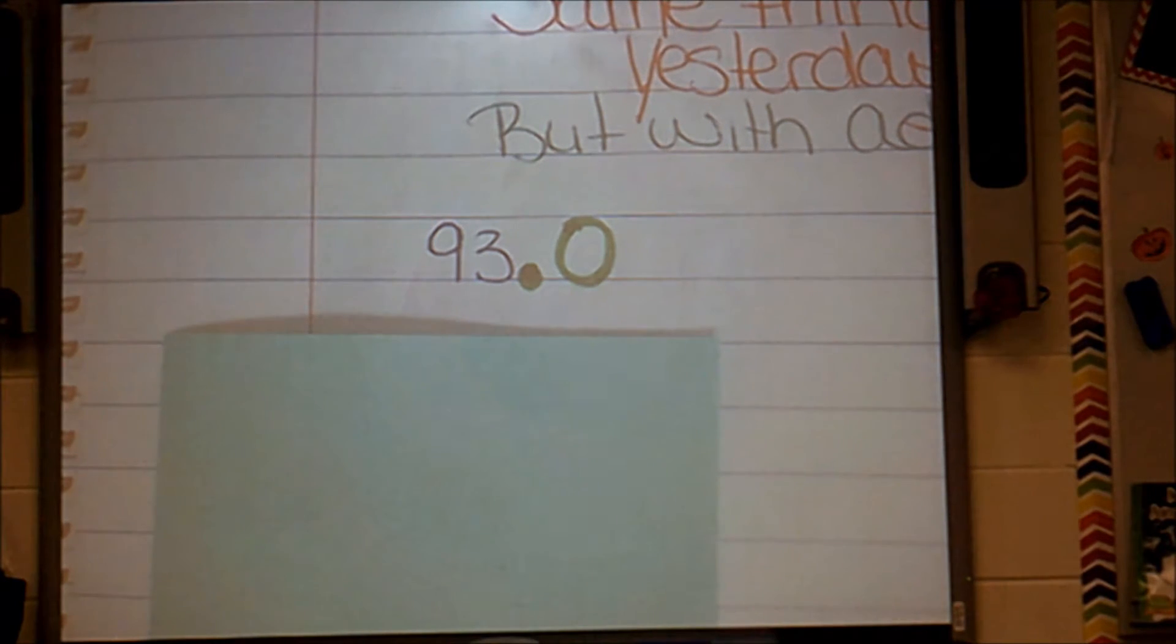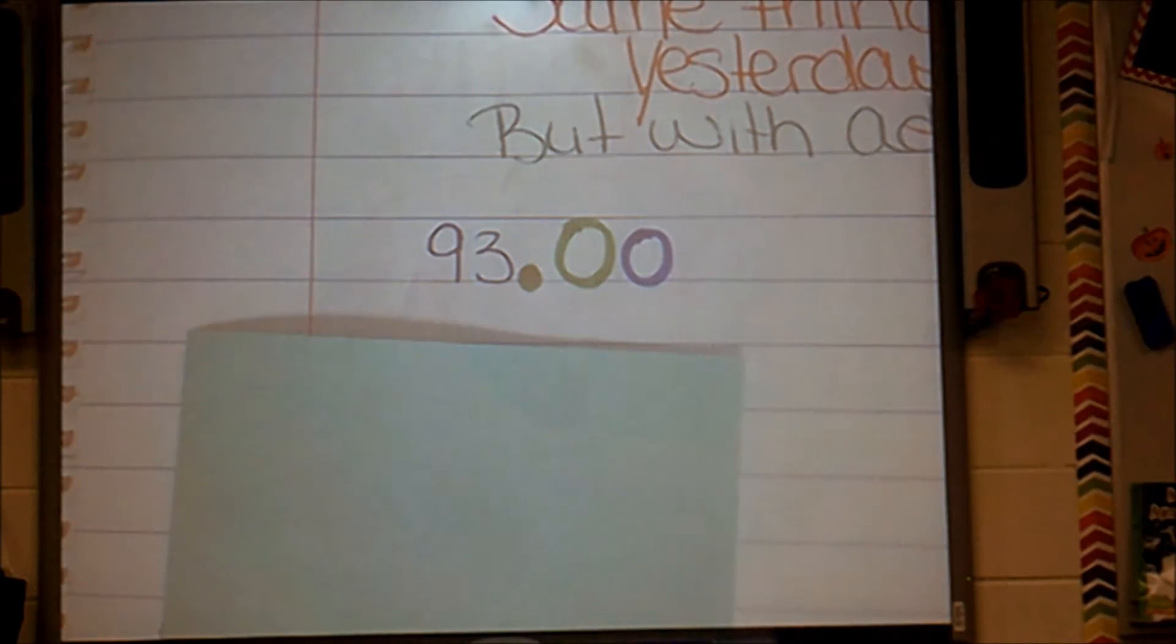Again, I would like you to read this number. I know I added a zero behind it, but you're right, it still says 93. So when I add a zero behind my decimal, it doesn't change the value. How about now? How would I read this number now? It still says 93. So two zeros behind my decimal, it still stays the same. Sounds like I can add as many zeros as I want behind that decimal and it's still going to say 93.